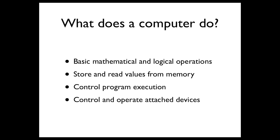So what does a computer actually do? As users, we're really abstracted away from what a computer is actually doing because there are so many devices attached to it. A computer really only does four basic things: math and logic; memory — storing and reading values so you can do math and logic on them; control the program execution; and control and operate attached devices — things like your video card, keyboard, and hard drive — ways to read data in and out and get input.